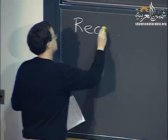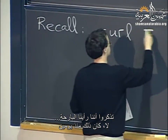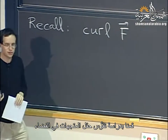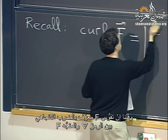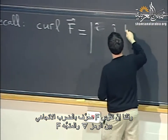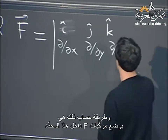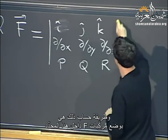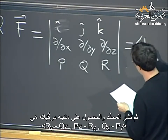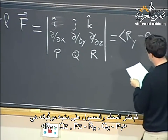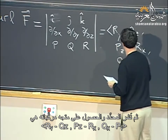Two days ago we learned about the curl of a vector field in space. The curl of F is defined by taking a cross product between the symbol del and the vector F. Concretely, we compute this by putting the components of F into a determinant and expanding, getting a vector with components r_y minus q_z, p_z minus r_x, and q_x minus p_y.